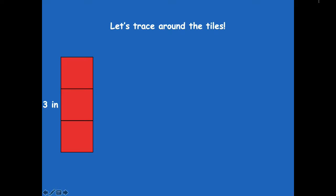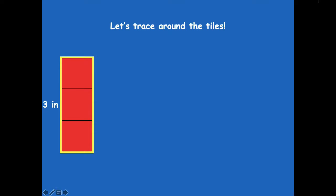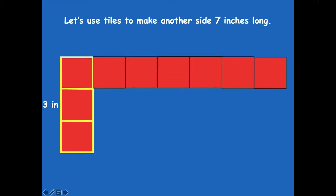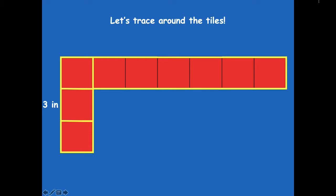Now let's lay three tiles on the board to make a side that's three inches tall, then trace around those tiles. We're going to draw horizontal lines to show where the tiles connect — take off the top tile and draw the line there, then take off the second tile and draw a line there, giving you two horizontal lines.